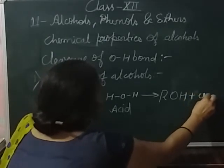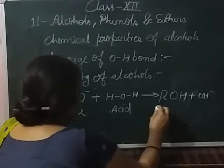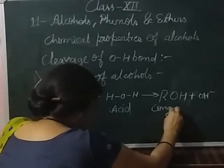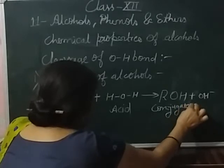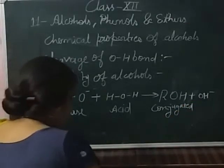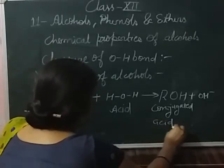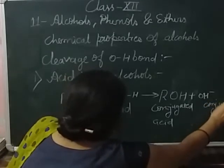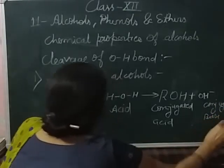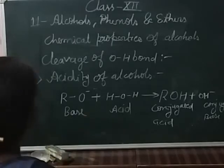The remaining part, O-H, is the hydroxyl part — it is the conjugated base. Water is a stronger acid than the alkoxide ion.